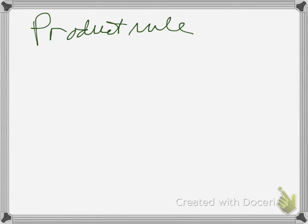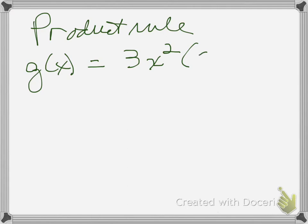Another rule we should go through is the product rule. We're going to do simple and then more complicated. So what if g of x equals 3x squared times x to the 5th? Say that you have to demonstrate knowledge of the product rule, so you have to view this as a product. Normally you would just combine x squared and x to the 5th into x to the 7th, but I want you to have a simple example of the product rule.